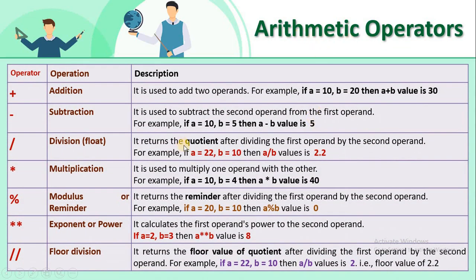Arithmetic operators are used to implement all the basic arithmetic operations like addition, subtraction, multiplication, division, etc. The plus operator is used to implement addition. For example, if a = 10 and b = 20, then a + b gives 30. The minus operator is used for subtraction. If a = 10 and b = 5, then a - b gives 5, that is 10 minus 5 equals 5.